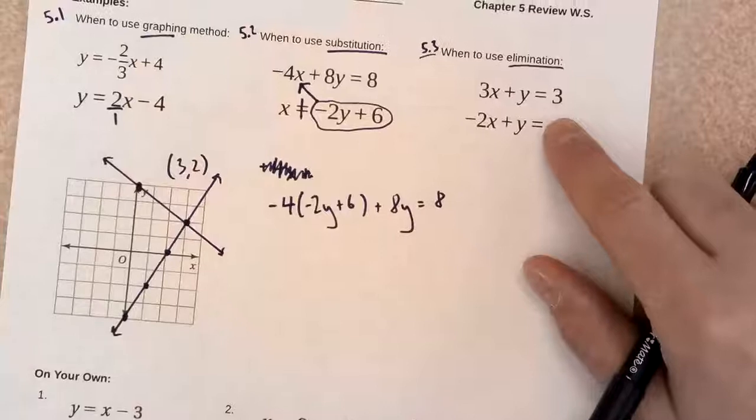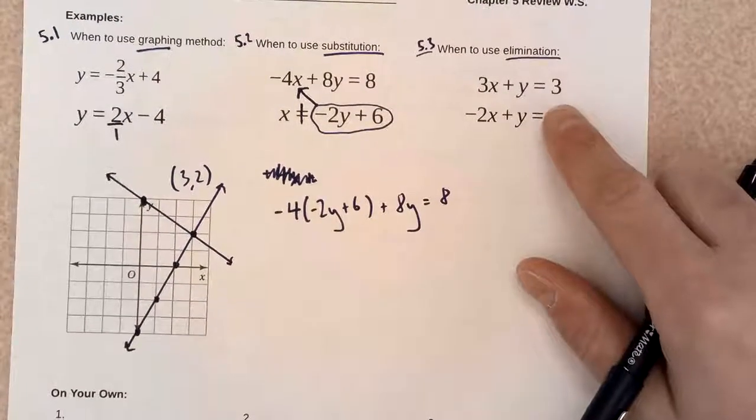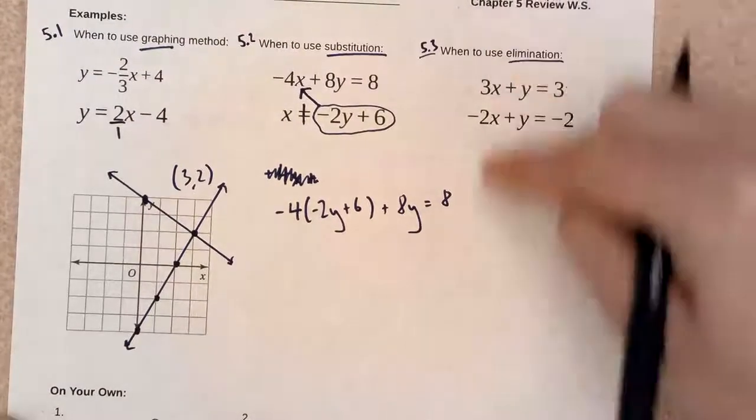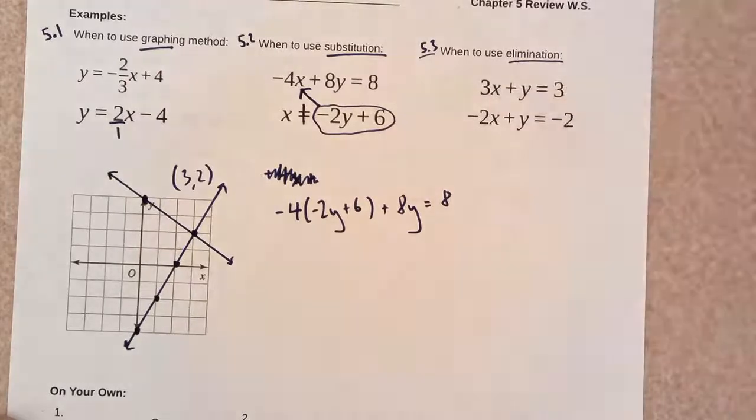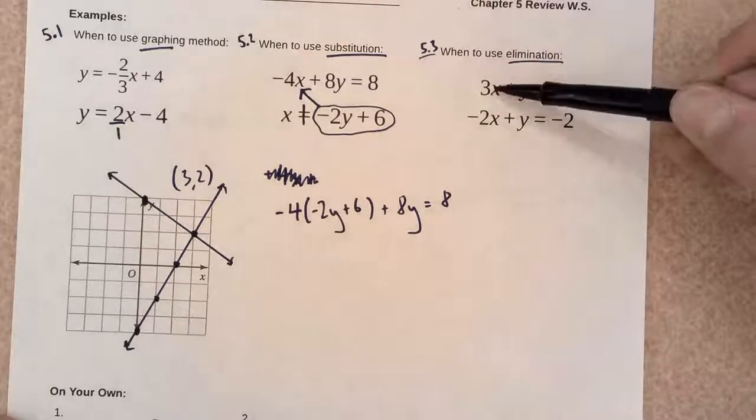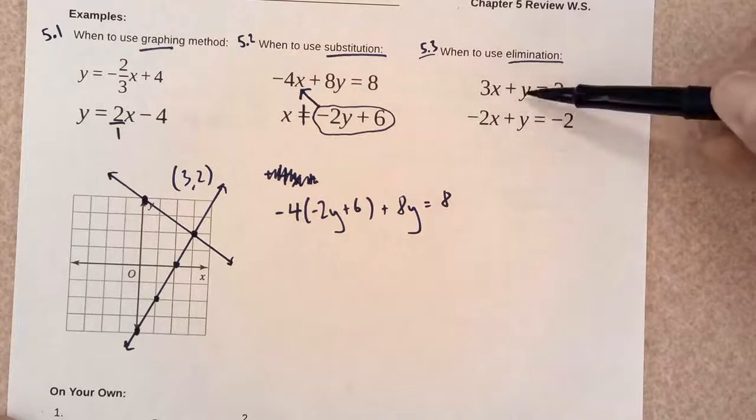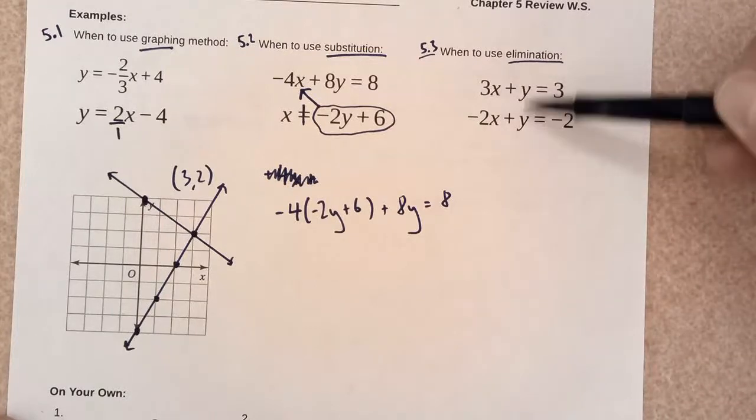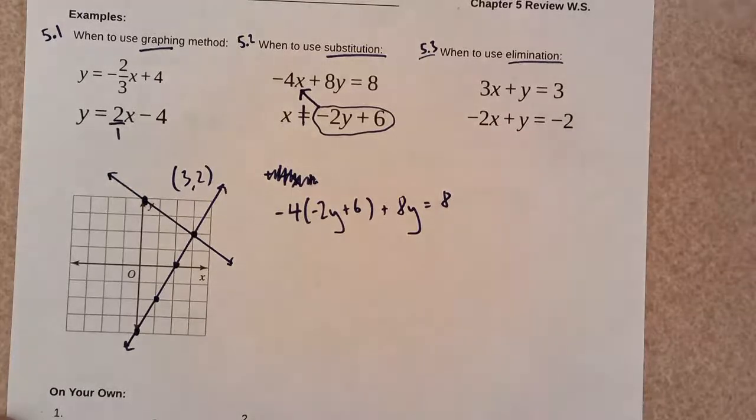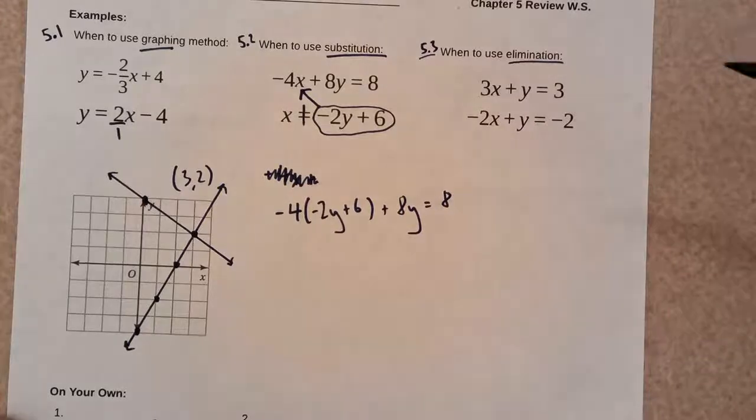All right. Elimination. Elimination works well when your equations are perfectly lined up. So, the x term is above the x. The y term is above the y. Equal sign above equal sign. And constant above constant. That works well. I need to choose to add these equations together or to subtract them.